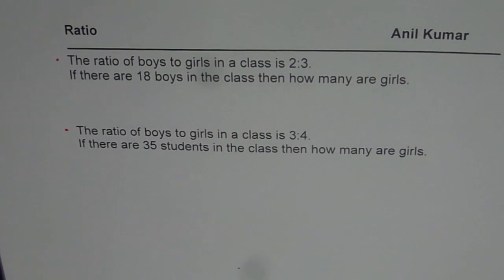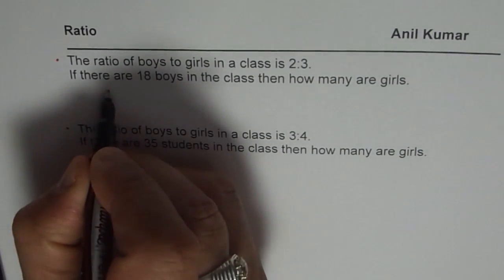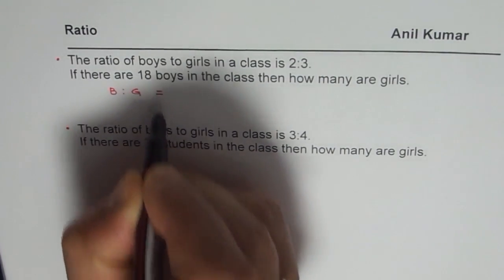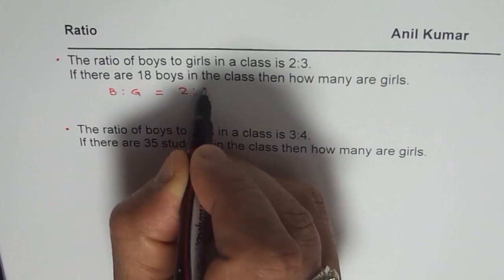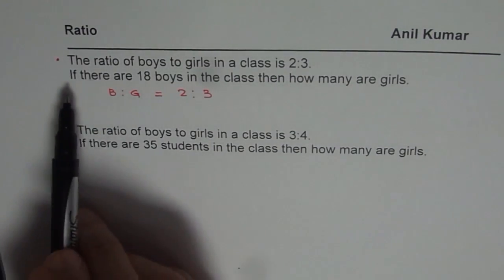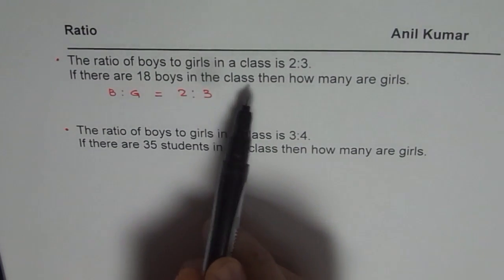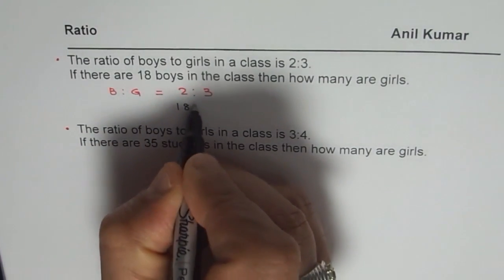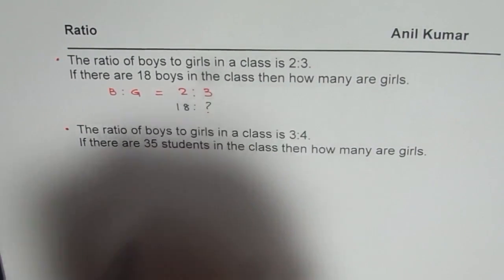Let's begin with the very first one. The ratio of boys to girls in a class is 2 is to 3. So what we are given is that boys to girls equals 2 to 3. Now the second statement is that there are 18 boys in the class, then how many are girls? So if the boys are 18, we want to find the number of girls.